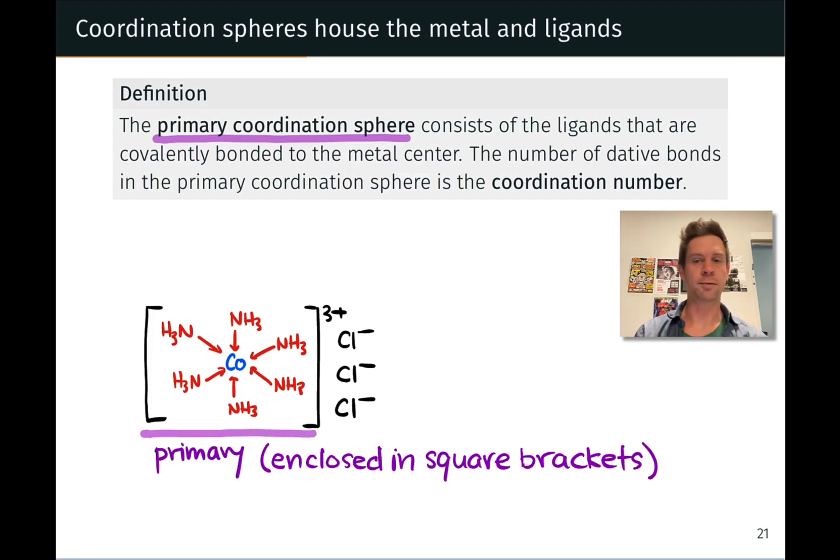Now the number of dative bonds within the primary coordination sphere is referred to as the coordination number of the metal or the complex. So here, for example, we have one, two, three, four, five, six dative bonds between the ammonia ligands and the cobalt-3 center.